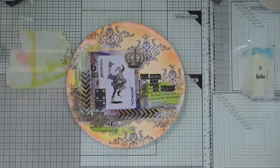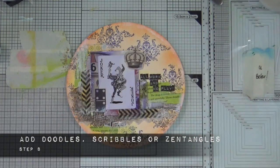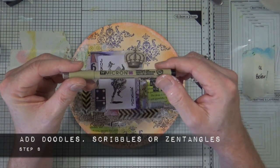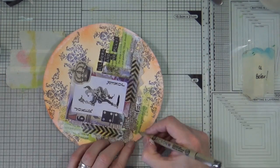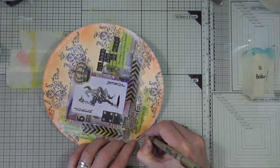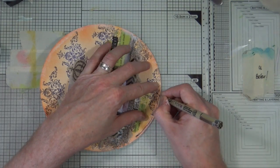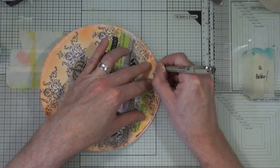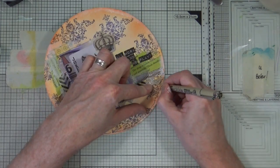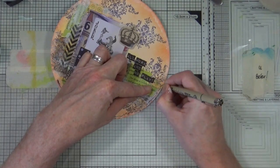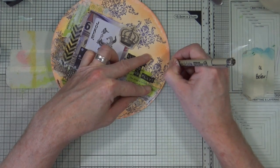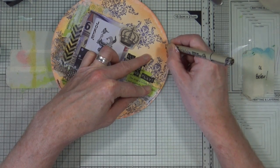So the final step then, step number eight, is to add doodles, scribbles or zentangles. For this I'm going to use my number eight micron pigma pen and I'm just going to create a kind of doodly, scribbly border all the way around my art journal page and then I'm going to add some little doodles around the page just to tie it all together.